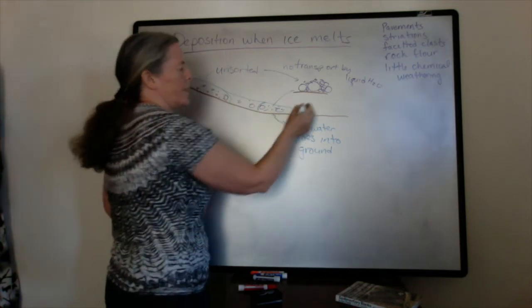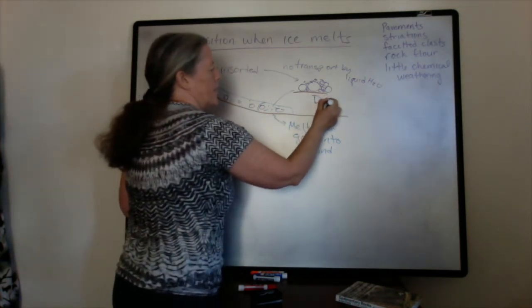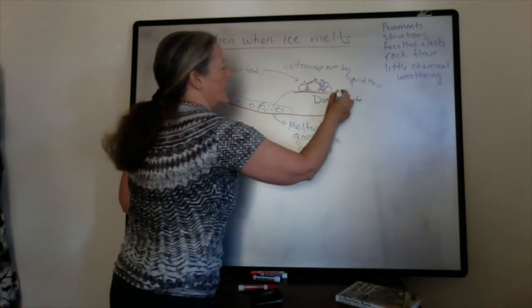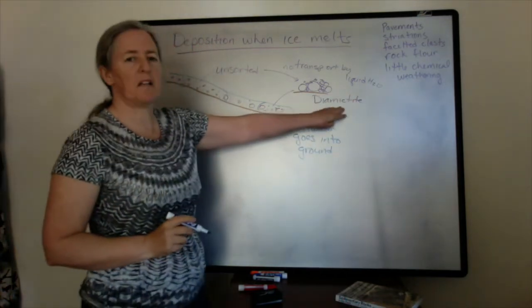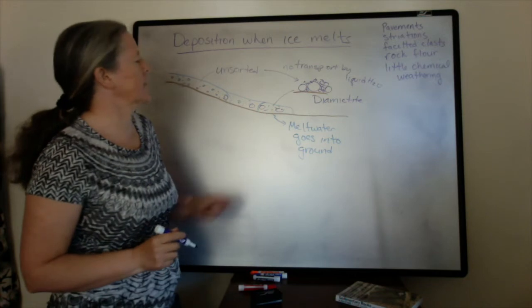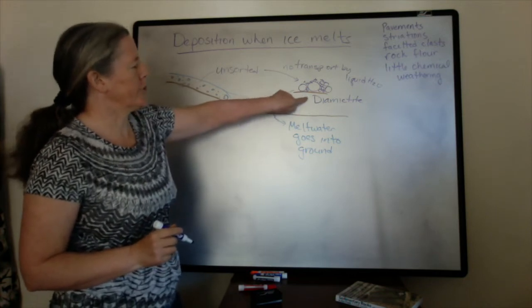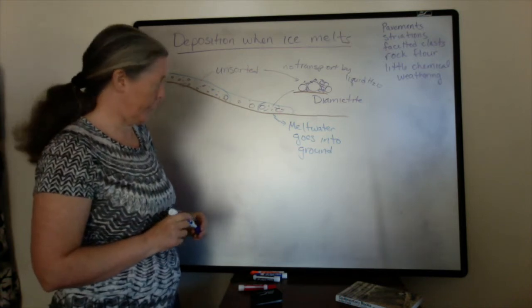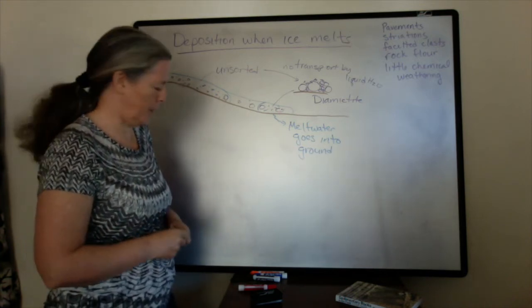We get this unsorted mix and it's called the diamictite. So dia as two, mict as clast, ite as rock when it gets lithified. What this means is that there's just this really, really huge range in grain size in the deposits.